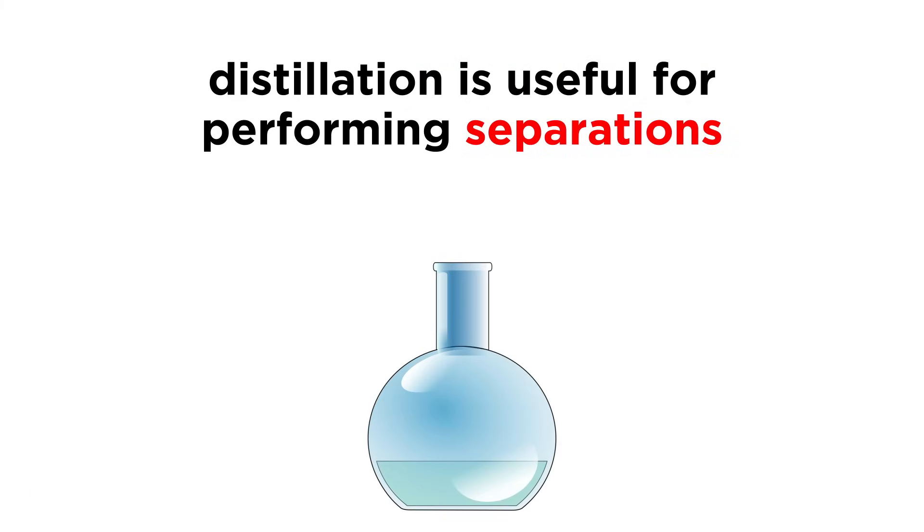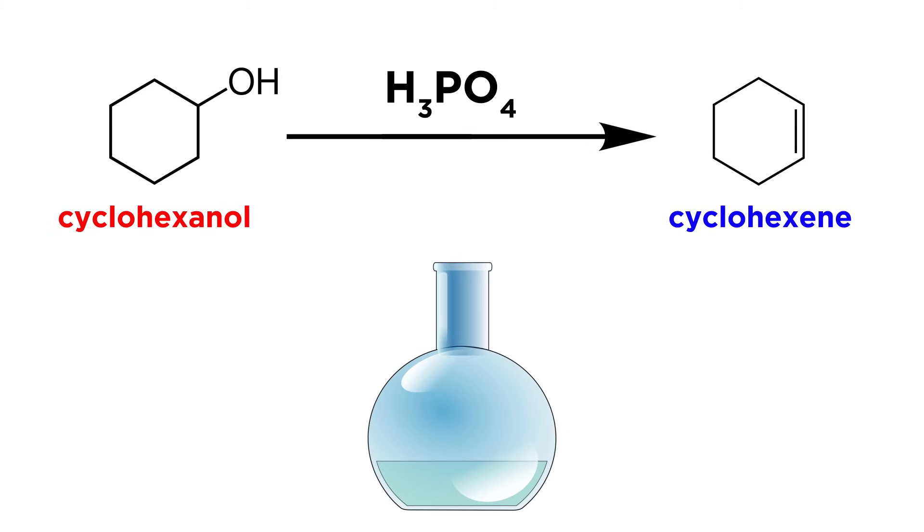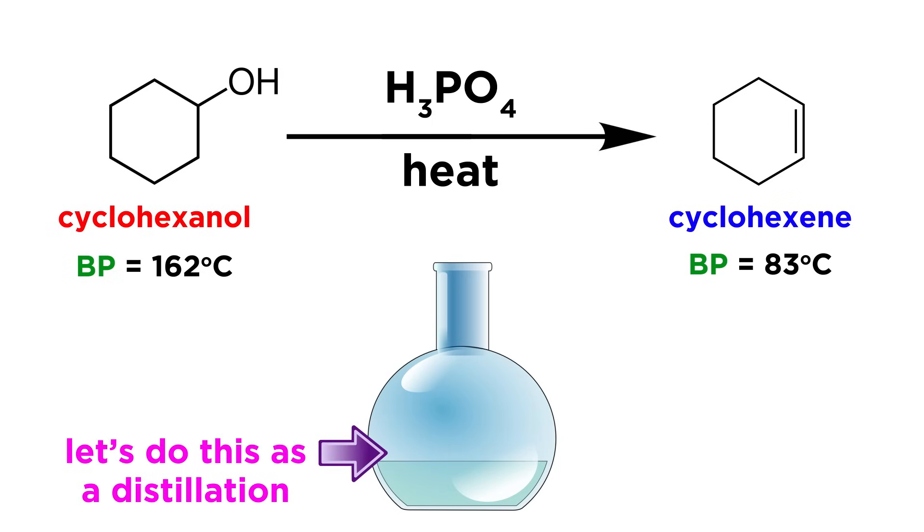So we can see how this technique is useful for separations. It can even be used in the context of a reaction. Say you're doing something like this, the dehydration of cyclohexanol by phosphoric acid to produce cyclohexene. The starting material has a boiling point of around 162°C because of its size and hydroxyl group, while the product boils at around 83°C. Since we want to heat this reaction up for it to proceed anyway, we can just perform the reaction in a distillation flask, and the distillate will be our product. Reaction and isolation of product all at once.